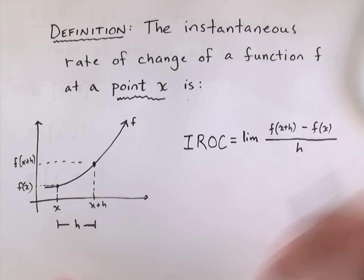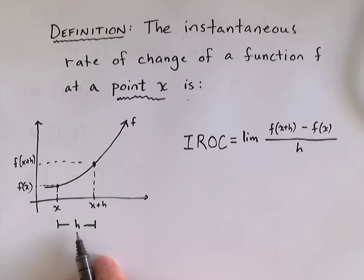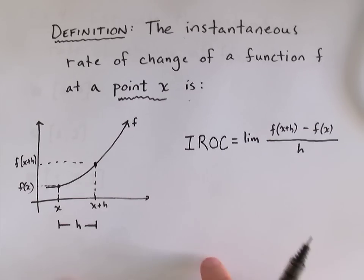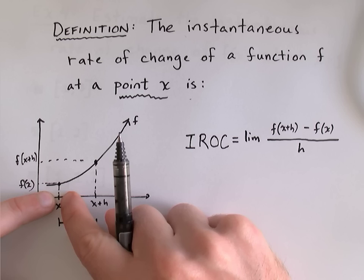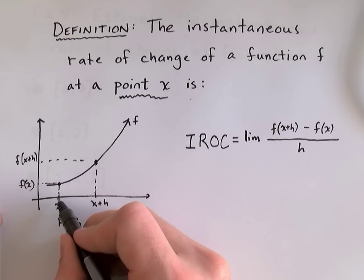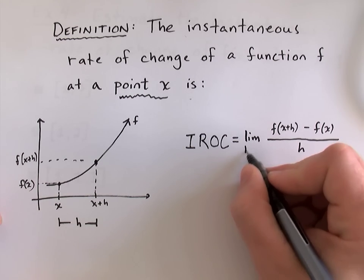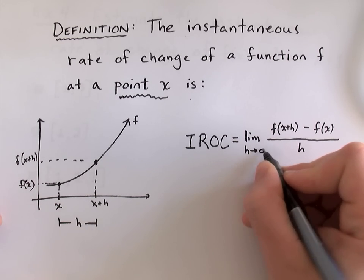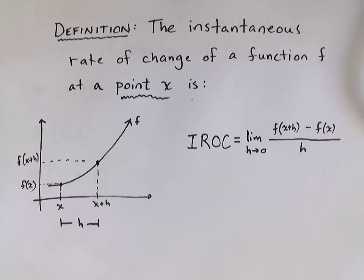So, the notation will look like this. L-I-M for limit. And I want to look at what happens when h shrinks, when it gets really, really small, because that will make this interval really tiny to the point that we're looking at the rate of change just at a point x. So, the limit as h goes to zero. That is the definition of the instantaneous rate of change.